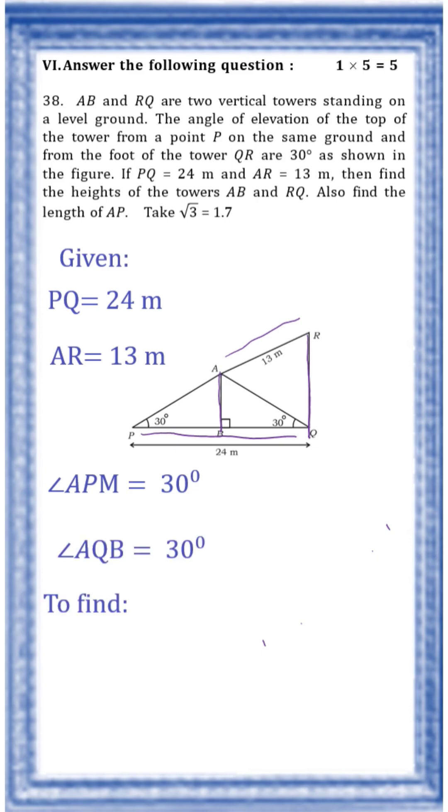Now what to find out? The height of the towers AB and RQ, and also you have to find the length of AP.